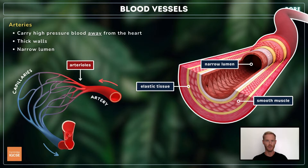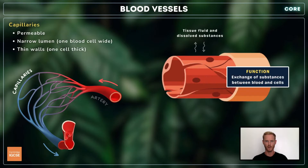Capillaries form a network throughout the organs and tissues. Their role is to facilitate the exchange of oxygen, carbon dioxide, food molecules and other substances between the blood and surrounding cells.